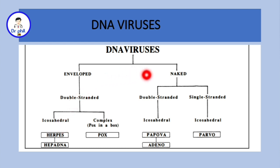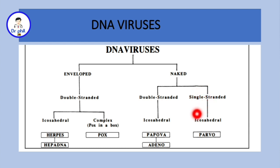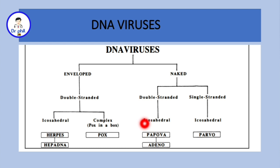Moving to naked DNA viruses: here we have double-stranded and single-stranded. For the single-stranded naked DNA virus, we only have one — the parvovirus, which is icosahedral. Then for double-stranded with icosahedral symmetry, we have papova, which includes papilloma, polyoma, and adenovirus.